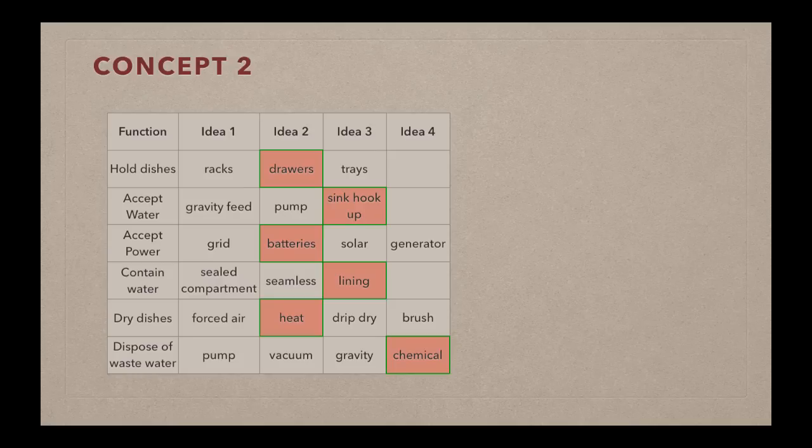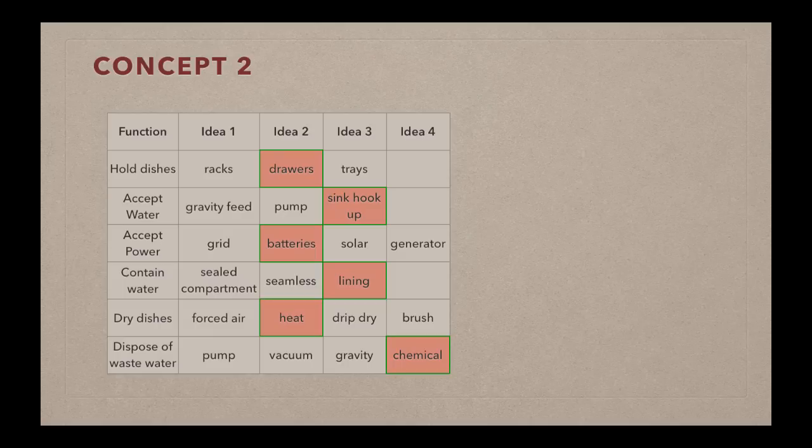As far as drying the dishes, maybe we're looking at heating and disposing of the wastewater. We might want to apply some kind of chemical treatment for doing that. And so this would be a second concept, and you can see how we could take additional combinations of ideas to generate numerous other concepts using these morphological matrices.